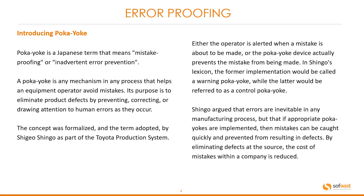Error proofing — introducing Poka-Yoke. Poka-Yoke is a Japanese term that means mistake proofing or inadvertent error prevention. A Poka-Yoke is any mechanism in any process that helps an equipment operator avoid mistakes. Its purpose is to eliminate product defects by preventing, correcting, or drawing attention to human errors as they occur. This concept was formalized and the term adopted by Shigeo Shingo as part of the Toyota Production System, or TPS.